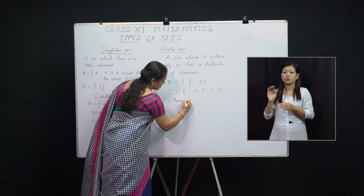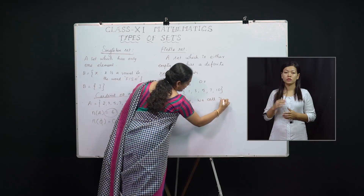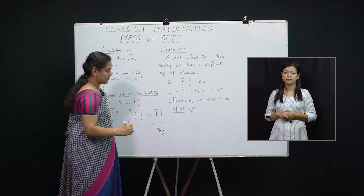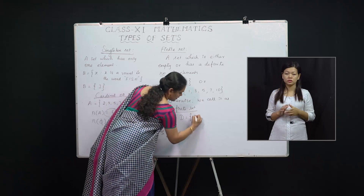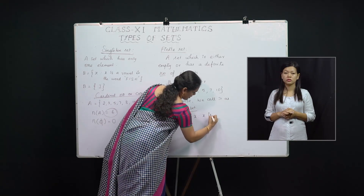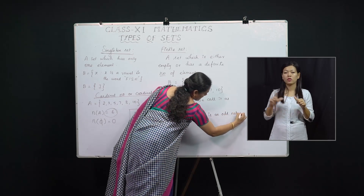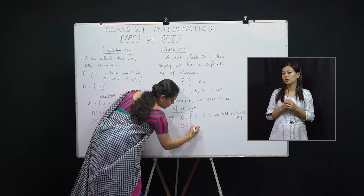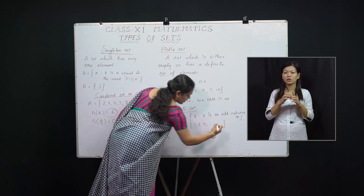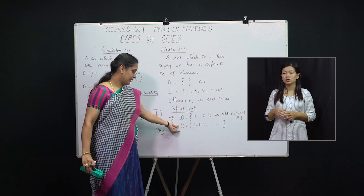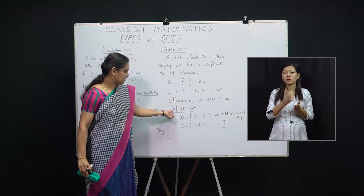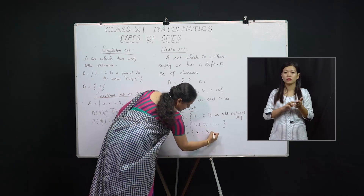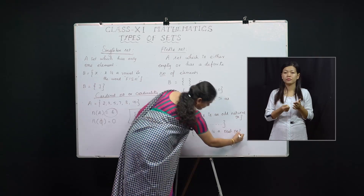Otherwise we call it an Infinite Set. For example, D represents the set of all odd natural numbers. In roster form: {1, 3, 5, ...}. We write a few numbers followed by dots. This represents an infinite set — we don't need to write all elements; it's not possible. Similarly, the set of all real numbers is written as {x : x is a real number}.